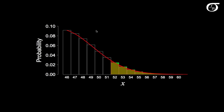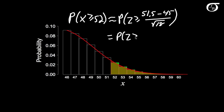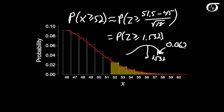If I start at 51.5, my red shaded area under the normal curve is going to be much closer to the total of the green binomial probabilities. So for P(x ≥ 52), applying the continuity correction: P(z ≥ (51.5 − 45) / √18) = P(z ≥ 1.532) ≈ 0.0628. That's closer to the true binomial probability of 0.0611 than the uncorrected value of 0.0495.